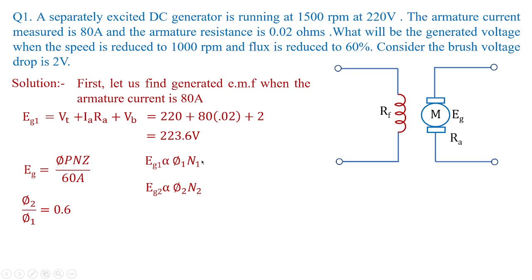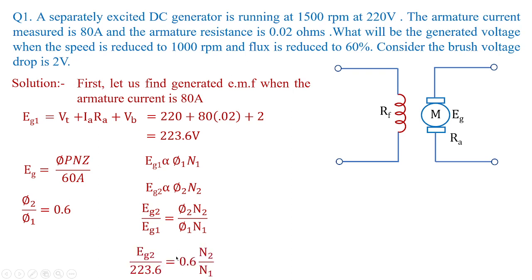N1 is 1500 rpm and N2 is 1000 rpm. Taking the ratio Eg2/Eg1, and neglecting proportionality constants, we get Eg2/Eg1 = (φ2/φ1) × (N2/N1). Substituting: Eg2 = 0.6 × 223.6 × (1000/1500), which gives Eg2 equal to 89.44 volts.